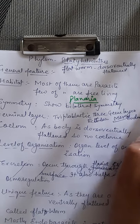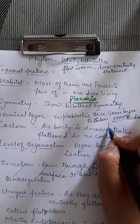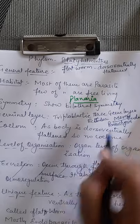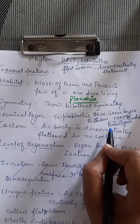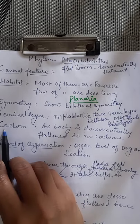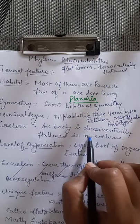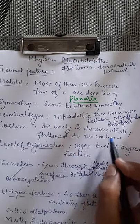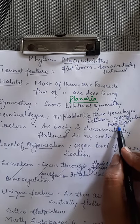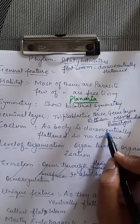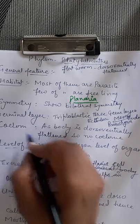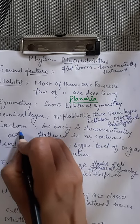Their mesoderm is also known as parenchyma. Next is the coelom — coelom means cavity. As the body is dorso-ventrally flattened, there is no space for coelom. Coelom is absent; it is filled by the parenchyma tissue. So they are acoelomate.